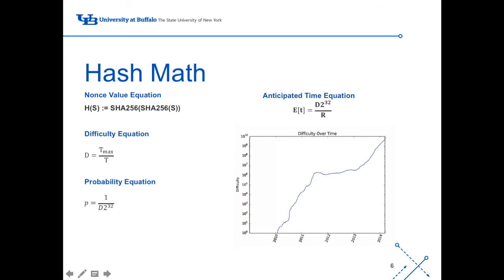This equation is called hash math. Hash math is the process of being able to validate a block. These equations all have different uses. The first equation at top left is used to find the nonce value. The second equation at middle left is used to provide the difficulty of mining the Bitcoin. The third equation at left is the probability of a successful mine. Finally, the equation at top right is the anticipated time the mine will take. The difficulty of the mines has increased since 2010 and is continuing to increase to this day. As equipment has gotten more technological and advanced, users should have had an easier time mining Bitcoin, but in order to keep Bitcoin secure, the difficulty had to also be increased.